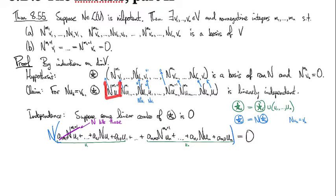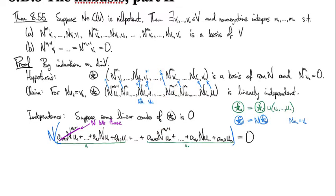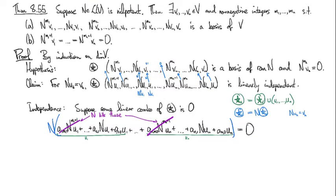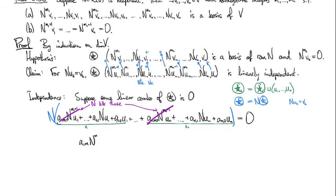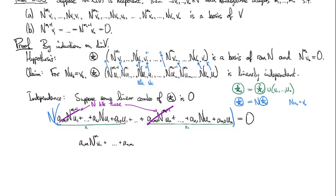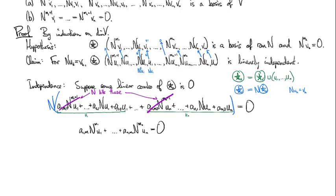N kills the top-power terms — death, death, and death. What's left behind is a_{1,m1} times N^{m1+1}(u1) plus ... plus a_{n,mn} times N^{mn}(un) equals zero. There's no term in here without an N attached to it, which means each one of these terms lives in star-v, and all the exponents are non-negative.